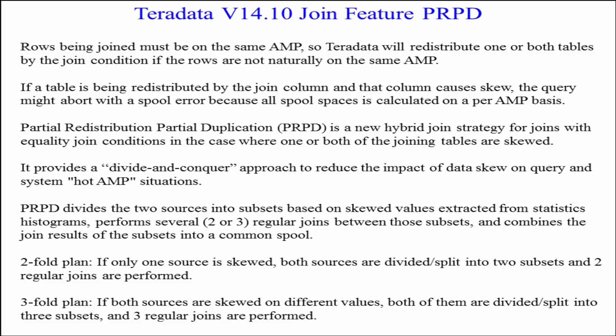PRPD performs several — two or three — regular joins between those subsets and combines the join results into a common spool. It's a two-fold plan if only one source is skewed: both sources are divided into two subsets and two regular joins are performed. The three-fold plan applies if both sources are skewed on different values: both are divided into three subsets and three regular joins are performed.